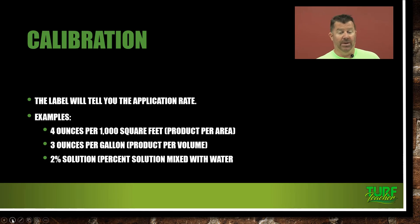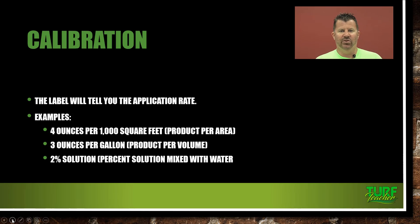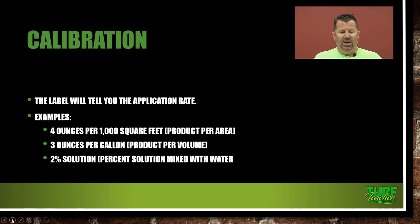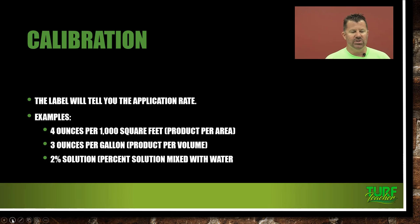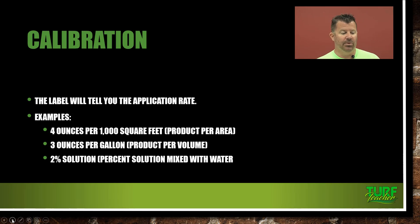You need to know the application rate, found on the pesticide label in the directions for use. Examples include 4 ounces per 1,000 square feet. I break down yards into 1,000-square-foot blocks — a lot of granular applications will tell you how many pounds per 1,000 square feet, or how many square feet a bag covers. You may also see 3 ounces per gallon for spot spraying, or a 2% solution mixed with water.